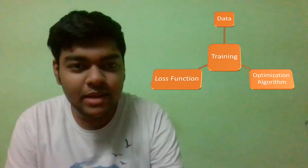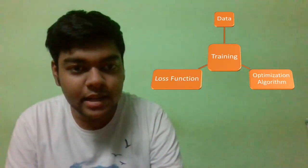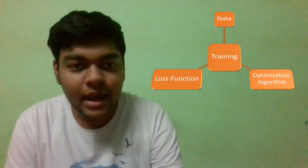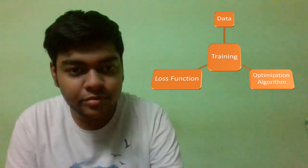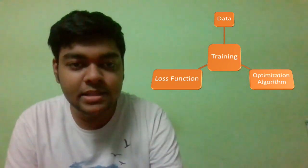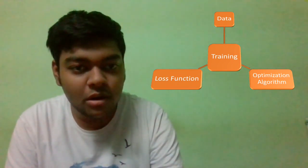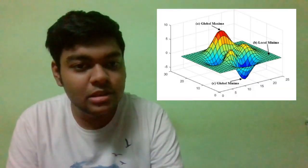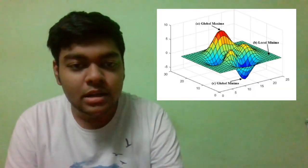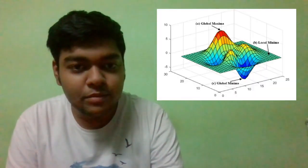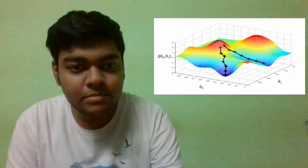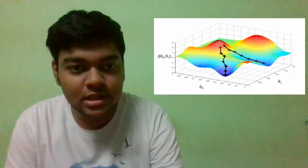This process of training uses some existing data that you have, and it basically uses a loss function and an optimization algorithm. The loss function helps the neural network to analyze its performance, and the optimization algorithm is used to minimize this loss function.